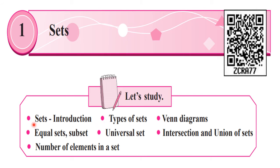We have seen the meaning of the word set and then we saw the various methods to write a set. Afterwards, in the previous lecture, we discussed about the types of sets — that means singleton set, null set, finite set and infinite set. Also, we saw what is the meaning of equal sets, and we discussed practice set 1.2 based on that.